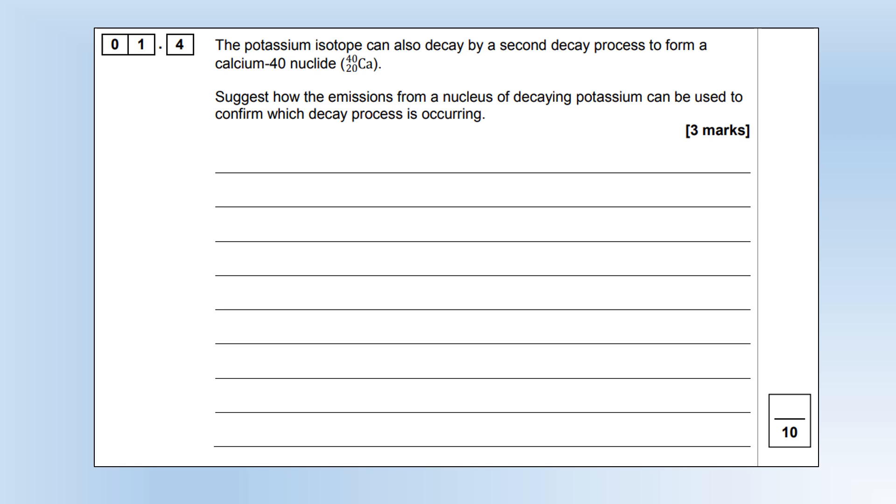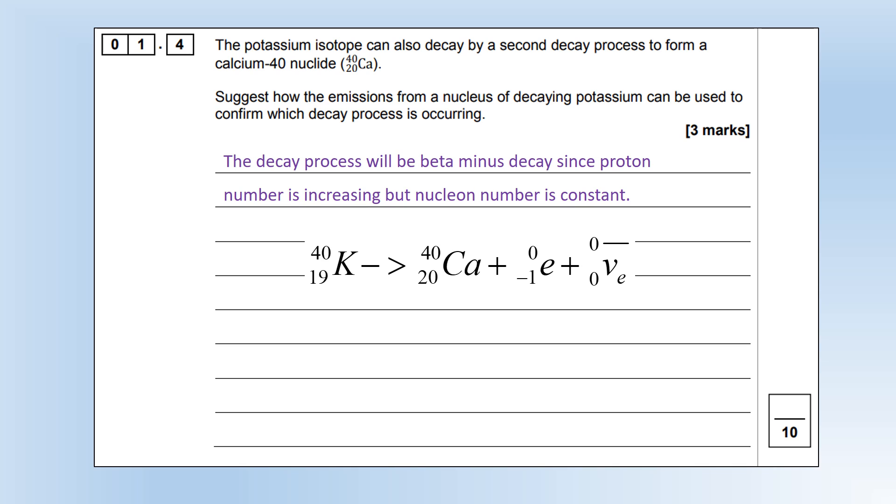The potassium isotope can also decay by a second process to form calcium-40. Suggest how the emissions from a nucleus of decaying potassium can be used to confirm which decay process is occurring. The decay process that we've got for producing calcium is clearly beta minus because the proton number is increasing but the nucleon number is constant. If we put this in a cloud chamber, we can see that the particles produced will deflect in a way that demonstrates they're negatively charged, and therefore we'll know it's beta minus rather than gamma decay, which would be undeflected in a cloud chamber.